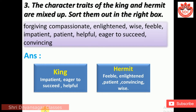Question 3: The character traits of the king and hermit are mixed up. Sort them into the right box. The traits are: forgiving, compassionate, enlightened, wise, feeble, impatient, patient, helpful, eager to succeed, and convincing. King: impatient, eager to succeed, and helpful. Hermit: feeble, enlightened, patient, convincing, and wise.